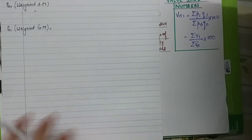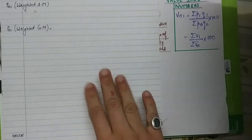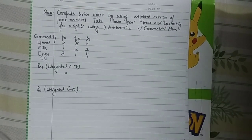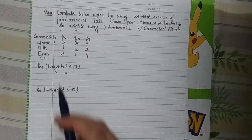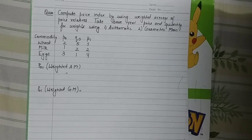Now I will take up a question so that you can understand the weighted average of price relatives method clearly. The question asks: compute the price index using the weighted average of price relatives, taking base year price and quantity as weights, using both arithmetic mean and geometric mean. Three commodities are given — wheat, milk, and eggs — with base year prices 2, 1, 3, base year quantities 5, 2, 1, and current year prices 3, 2, 4.